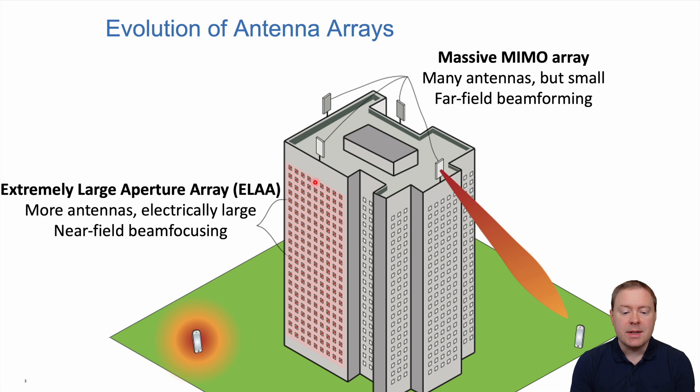There is the possibility of building extremely large aperture arrays with more antennas that are electrically large, filling a large portion of your field of view. Then you might be able to do near field beam focusing where signals are confined around the user. This is a sketch we drew in 2019, but the question is, is this really practically possible?